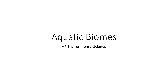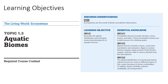Welcome to the second PowerPoint about biomes, this one focusing on the aquatic biomes. The learning objective here — we're still in topic 1.3, aquatic biomes — we are still looking at ecosystems being the result of biotic and abiotic interactions. The learning objective is to describe the global distribution and principal environmental aspects of aquatic biomes. We'll go through the essential knowledge at the end.